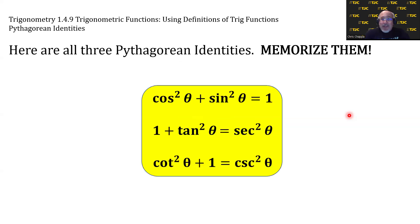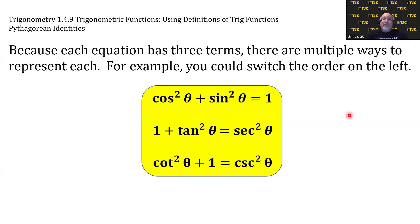Here are all three Pythagorean identities. I'm not kidding. You need to memorize them. And by the way, because each equation is three terms, there are multiple ways to represent each.